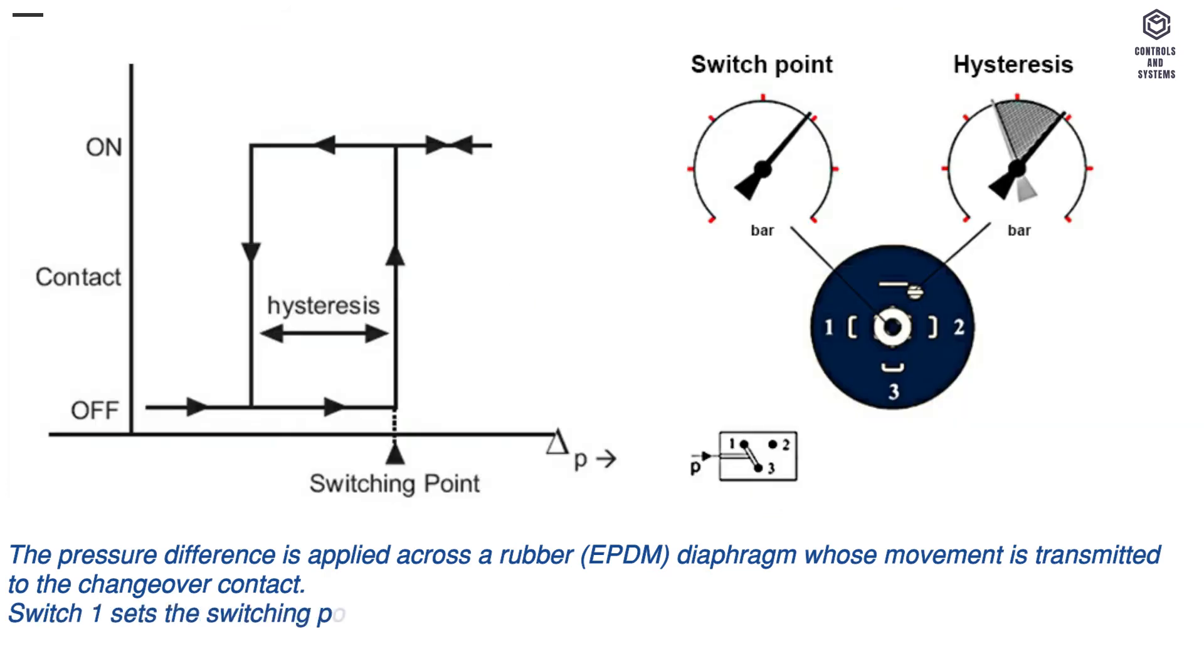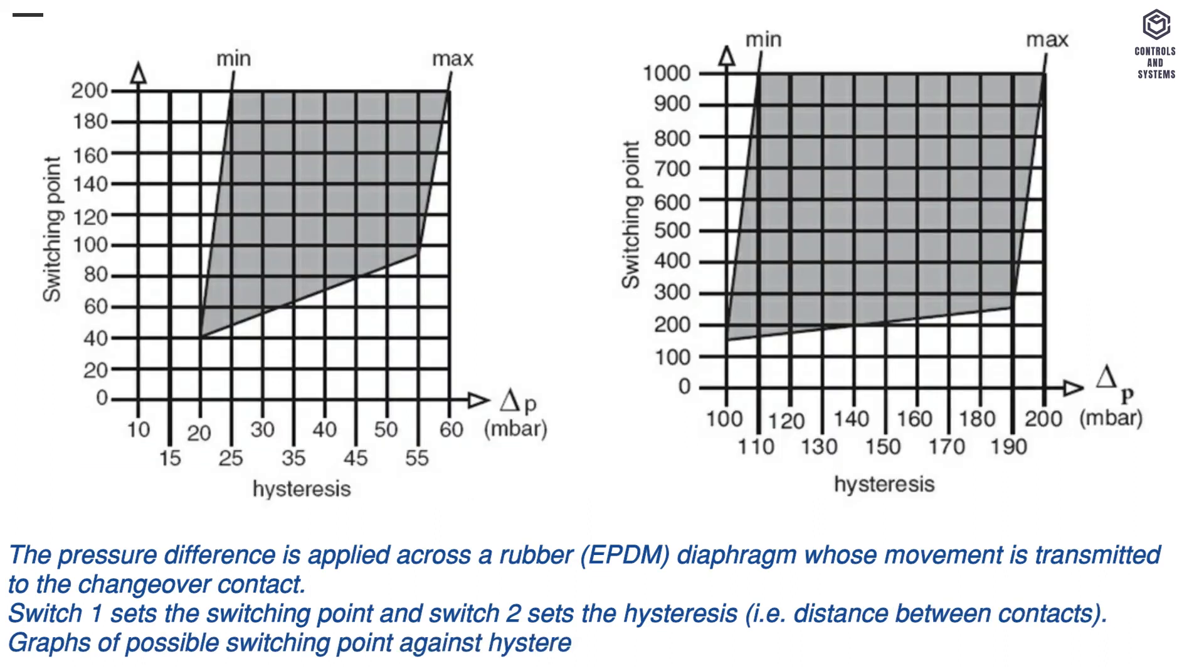Switch 1 sets the switching point and switch 2 sets the hysteresis, that is distance between contacts. Graphs of possible switching points against hysteresis are shown below for both ranges of sensor.